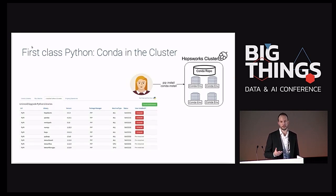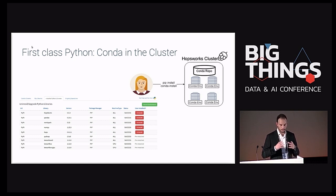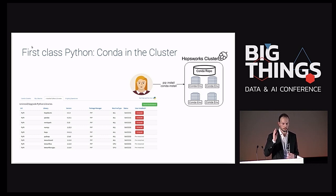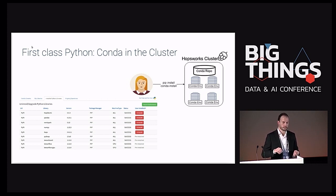We went with the process option because it fit our model better. To solve the Python environment consistency problem across the cluster, we manage environments with Anaconda. Each workspace has its own Python environment and it's fully self-service — you go to the UI, search for the library you want to install like Beam, and it will install it. We have background services that replicate and install all the environments and make them available on the cluster.